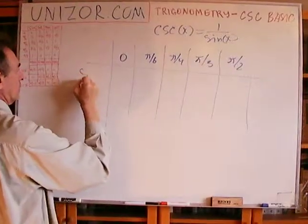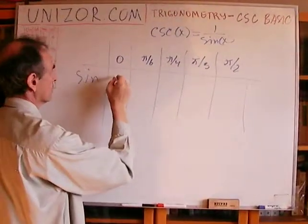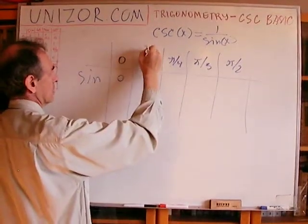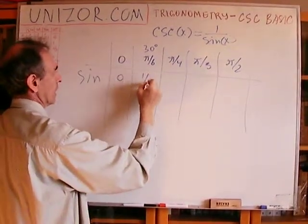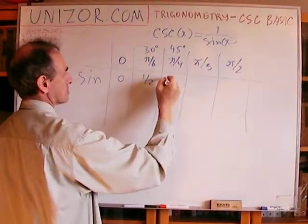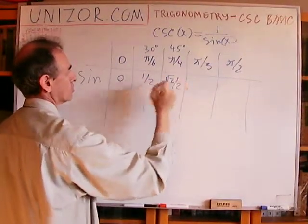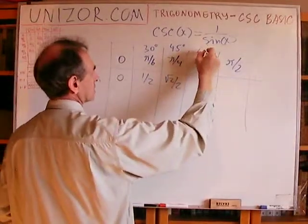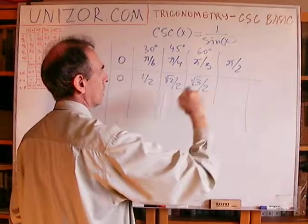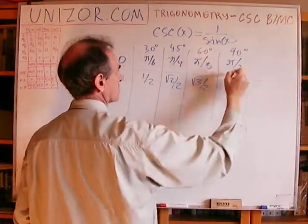So if this is my sine: sine of 0 is 0, sine of pi over 6, which is 30 degrees, is 1 half. Pi over 4, which is 45 degrees, that's square root of 2 over 2. Now this is 60 degrees, this is square root of 3 over 2, and this is 90 degrees, which is 1.